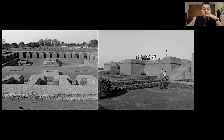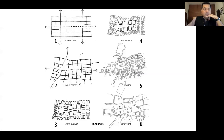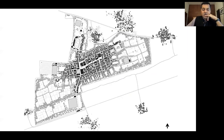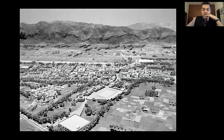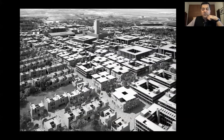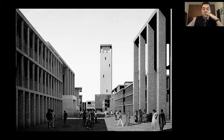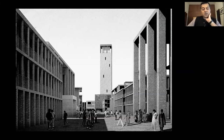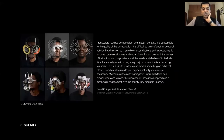Nalanda University — done with Allies and Morrison — was an expression of that particular location, bringing brick to bear while thinking of it as a mixed-use university campus. We lost the competition to Rahul and Housey's office, and it is now under construction. But it was a project we were really keen on pursuing together.